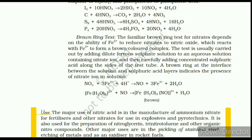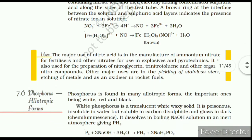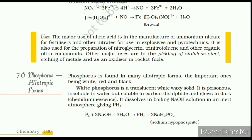Brown Ring Test (continued): The familiar brown ring test of nitrates depends upon the ability of iron ions to reduce nitrate to nitric oxide, which reacts with iron ion to form a brown-colored complex. The test is usually carried out by adding dilute ferrous sulfate solution to an aqueous solution containing nitrate ion, and then carefully adding concentrated sulfuric acid along the sides of the test tube. A brown ring at the interface between the solution and sulfuric acid layers indicates the presence of nitrate ion in the solution. Uses of Nitric Acid: The major use is in the manufacture of ammonium nitrate for fertilizers and other nitrates for use in explosives and pyrotechnics. It is also used for preparation of nitroglycerin, trinitrotoluene, and other organic nitro compounds. Other major uses are in pickling of stainless steel, etching of metals, and as an oxidizer in rocket fuels.